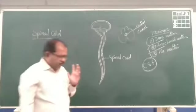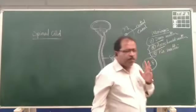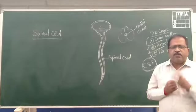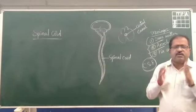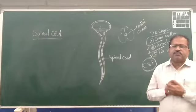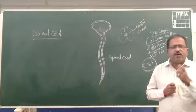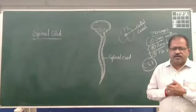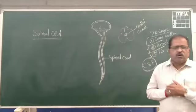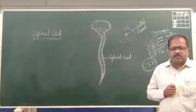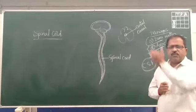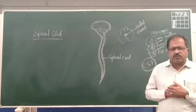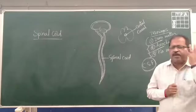There are 31 pairs of spinal nerves present in the spinal cord, and all 31 pairs are completely mixed nerves. It means that they have both sensory regions as well as motor regions. Sensory nerves carry information from the sense organs to the brain, and motor nerves carry information from the brain and spinal cord to the body.